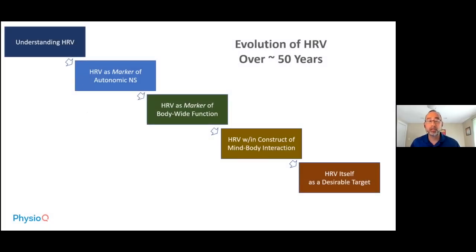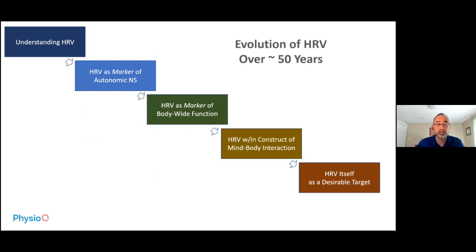To illustrate how heart rate variability has evolved over the years, I have put together five stages. This is based on the prevailing scientific paradigms that existed in each of these stages. Unfortunately, I won't be able to go through all five stages — it will probably take three talks overall to cover all of them.